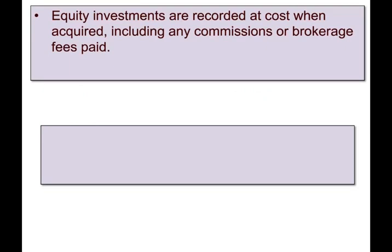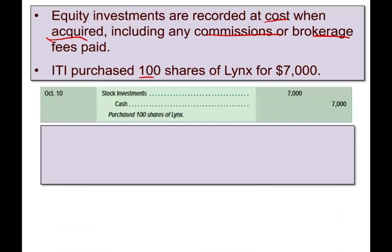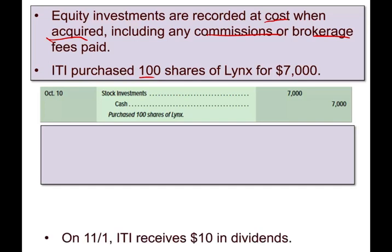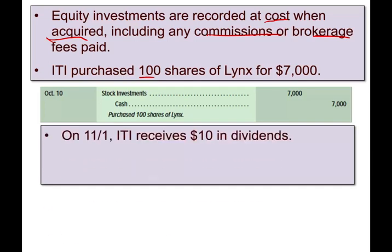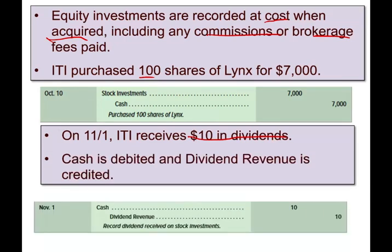Equity investments are initially recorded at cost, just like any other asset when acquired, including any commission or brokerage fee — they get added to the cost. For example, ITI purchased 100 shares for $7,000: debit stock investments $7,000, credit cash $7,000. Then on 11-1, the company received $10 in dividends: debit cash, credit dividend revenue. We received cash because we hold the stocks — it's called dividend revenue.